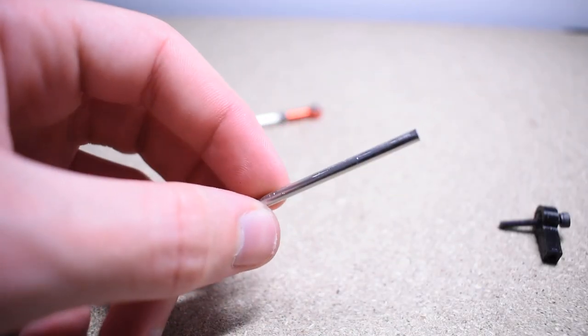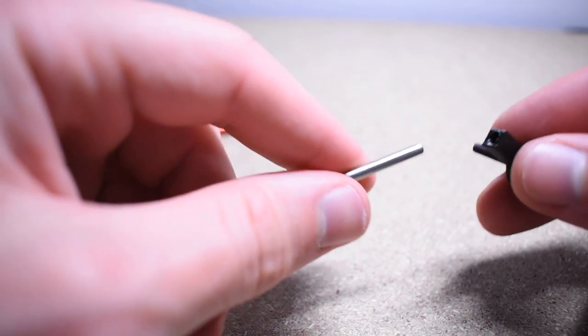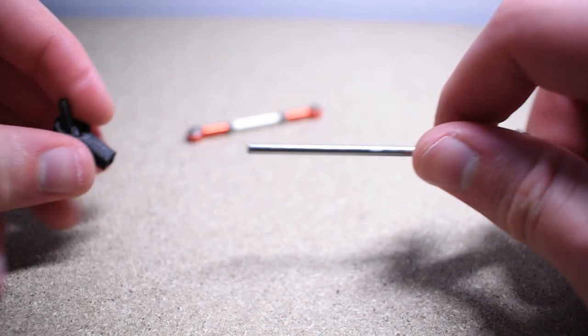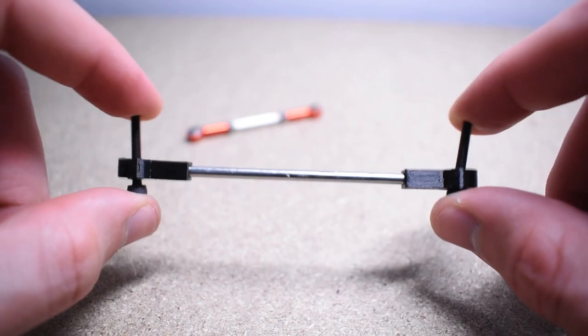For the actual rod itself, I'm using some 3mm smooth rods that I had lying around. These are really cheap and you can pick them up on the likes of eBay for just a few pounds.